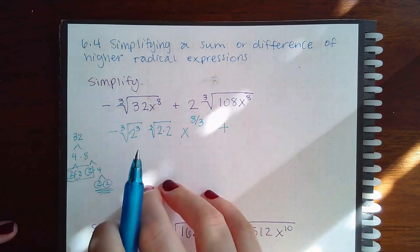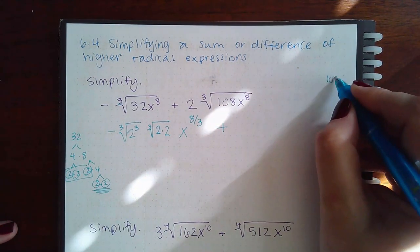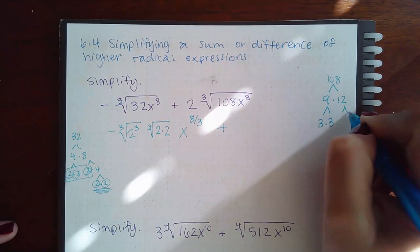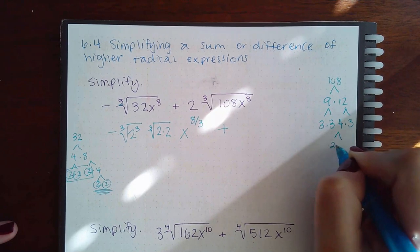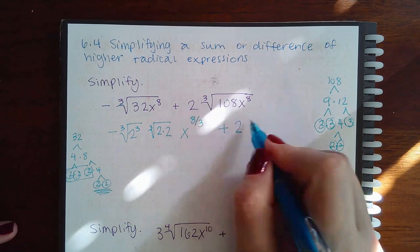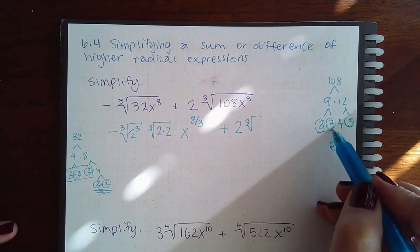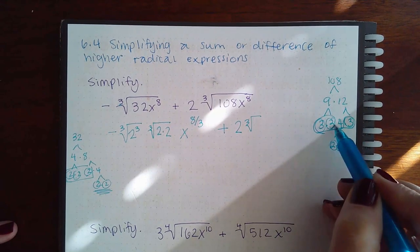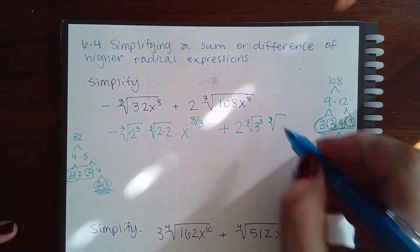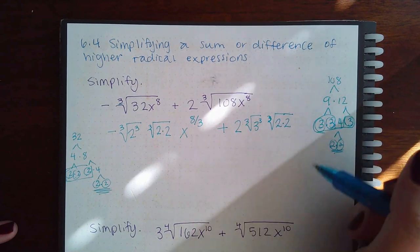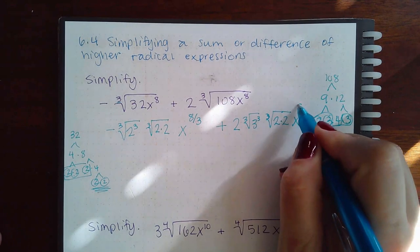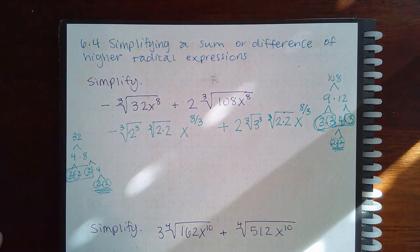Now I'll do the same thing on the other side. 108 is 9 times 12, which is 3 times 3, 4 times 3, and 2 times 2. Those are my primes — the 2 is already there. Then taking the cube root, I need a group of three. I have a group of three: 3, 3, 3 — so 3 to the third power. But I also have these left over: 2 times 2, or 2 squared. And then x to the 8 over the index 3.